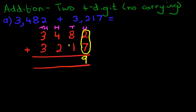We're now going to do the tens column. What is 8 plus 1? Well that's nice and easy. That is also 9. And now we're going to do the hundreds column. So what is 4 plus 2? That's right, it's 6.